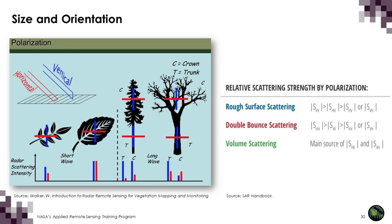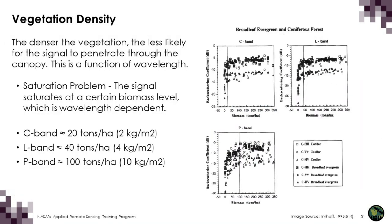Regarding size and orientation, a vertically polarized signal will interact with vertical components of the land surface — for vegetation, that would be the trunk or the vertical component of a leaf. The same applies for horizontal polarization. Regarding vegetation density, the denser the vegetation, the less the penetration. At C-band in a boreal forest, the signal saturates at around 20 tons per hectare; at L-band around 40 tons per hectare; and at P-band around 100 tons per hectare.